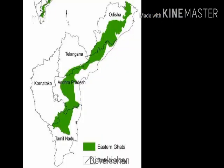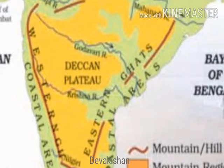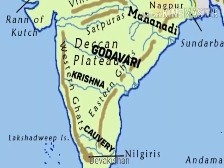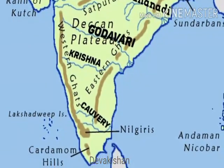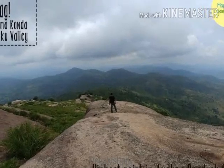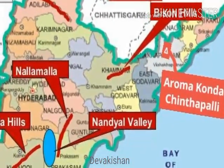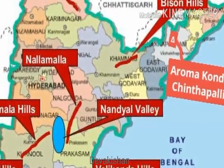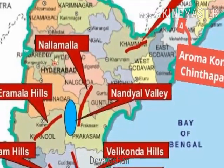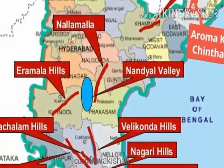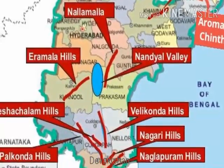The Eastern Ghats extend from the Mahanadi Valley in the north to the Nilgiris in the south, but their structure is not continuous. Rivers that originate in the Western Ghats, like Godavari and Krishna, cut across the plateau and join the Bay of Bengal. The average height of the Eastern Ghats rarely exceeds 900 meters. The highest peak is Rompa Conda at Chintapalli, 1,680 meters, in Andhra Pradesh. Nilamalai, Velakonda, Palakonda, and Seshachalam Hills are some hilly tracts of the Eastern Ghats. The remarkable feature of the peninsular plateau is black soils formed due to volcanic activity.